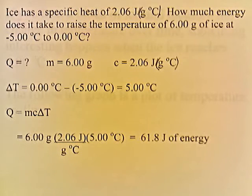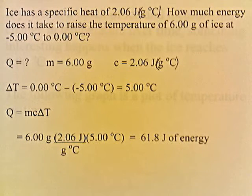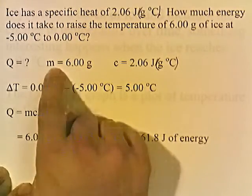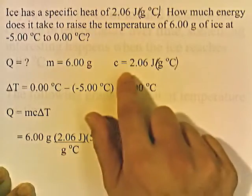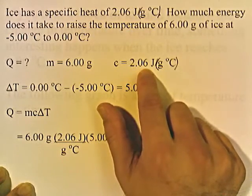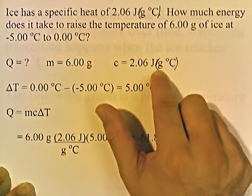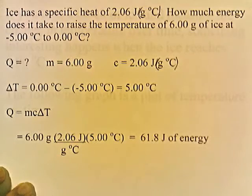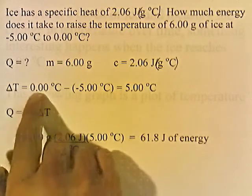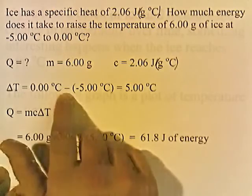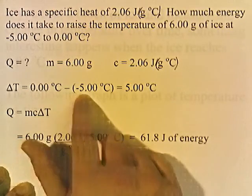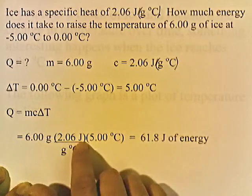Here's a problem. Ice has a specific heat of 2.06 joules per gram degree Celsius. How much energy does it take to raise the temperature of 6 grams of ice at negative 5 degrees Celsius to 0 degrees Celsius? The mass M is 6 grams, the specific heat C is 2.06 joules per gram degree Celsius, and delta T is 0 minus negative 5, which is positive 5 degrees.